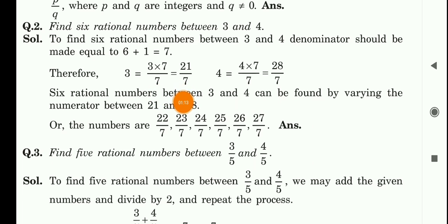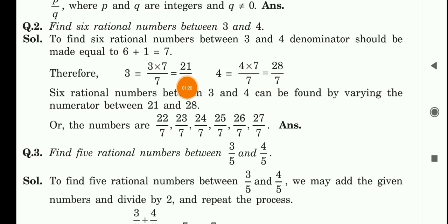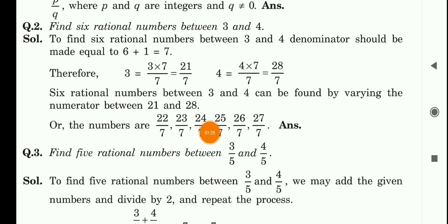तो हमें number मिल गया: 21 upon 7 और दूसरा number है 28 upon 7. इनके बीच की जो संख्याएँ हैं, वह हमारे rational numbers होंगी। इनके बीच में संख्याएँ हैं: 22, 23, 24, 25, 26 और 27. और हमारा denominator क्या है? वह है 7, तो सबमें upon में 7 लगा देंगे।